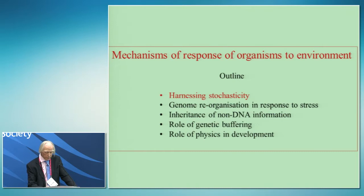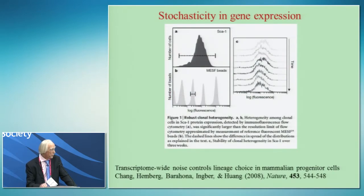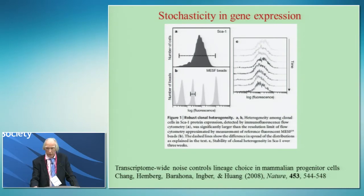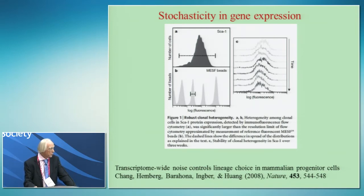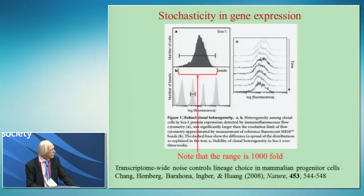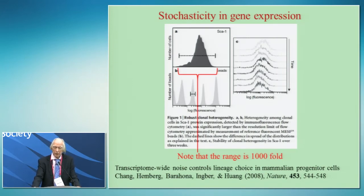Let's look at harnessing stochasticity. This is from the work of Huang and his colleagues published in Nature just a few years ago, looking at the extent of stochastic expression in a population of cells expressing a particular protein. You'll find stochastic expression for all proteins in neighboring cells. The heterogeneity is actually quite extraordinary — the range, in this case, is 1,000-fold.